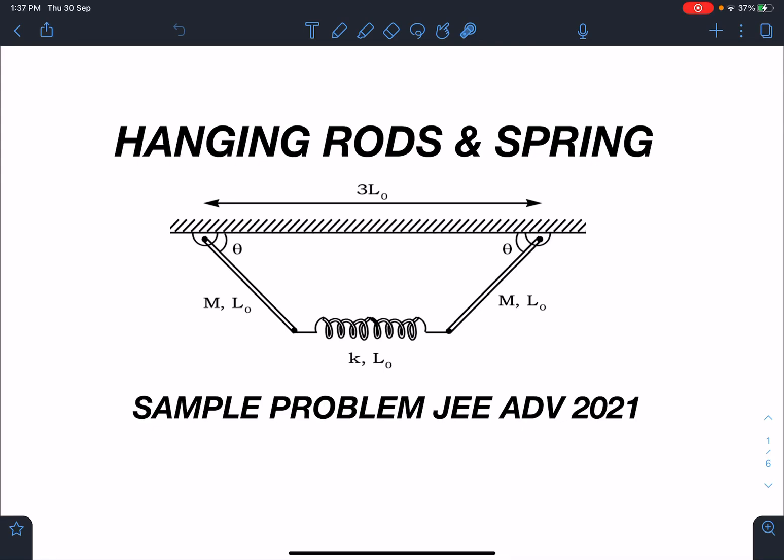Hello everyone, welcome to my channel Indian School of Physics. This is Nitin here and I come with another sample problem for JEE Advanced 2021. It is just a guesswork, a speculation about the possibilities. Maybe similar type of questions you can expect. It is hanging rods and spring and the maximum chances are that none of these questions you will see in the paper.